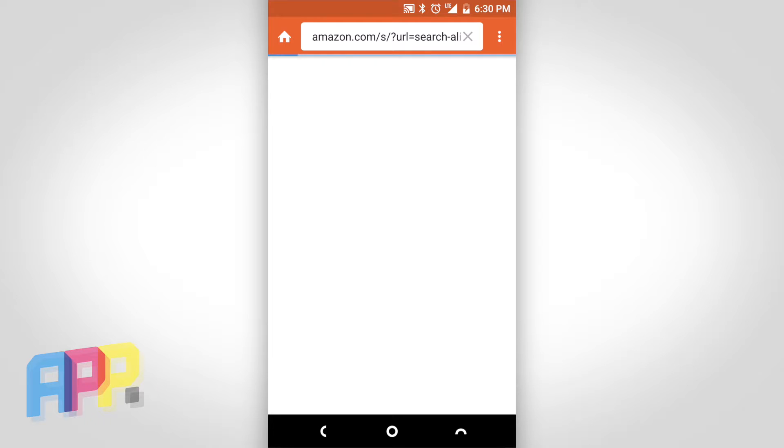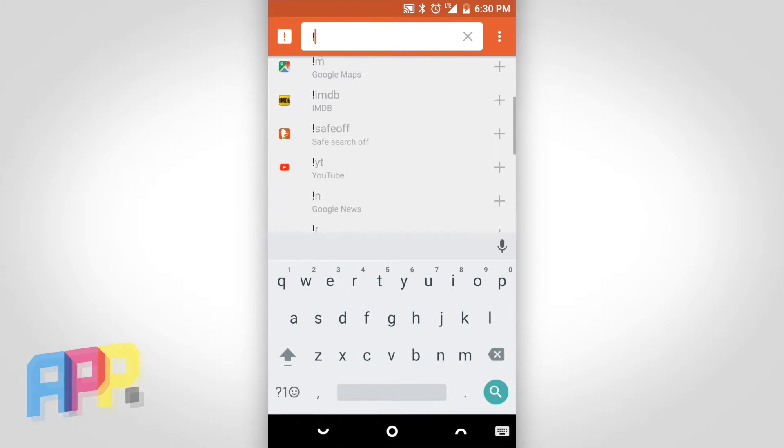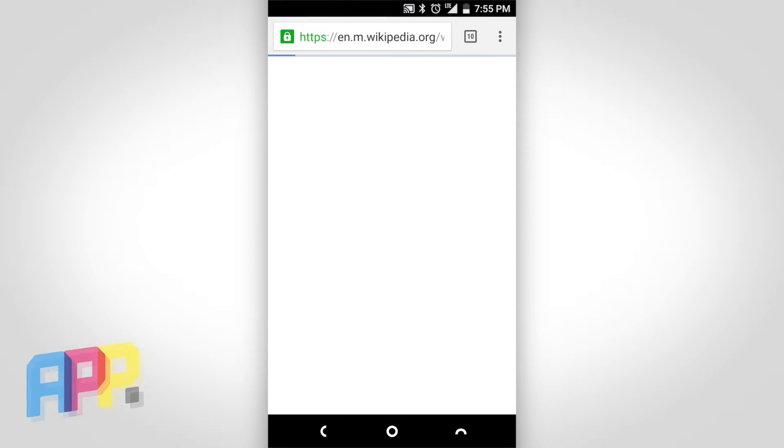Bangs can either be typed out in your search term with an exclamation point, or by tapping next to your search and selecting from a list. Like the Google app on iOS and Android, results are served up in an in-app browser, but easily pushed out to your browser of choice.